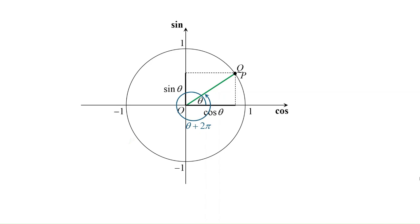However, we notice that q went back to p. Same point implies same coordinates. Then theta and theta plus 2π would have the same sine and cosine ratios.